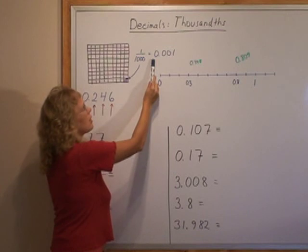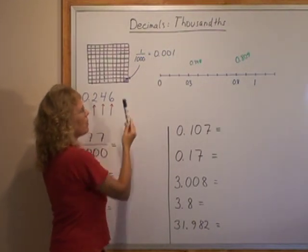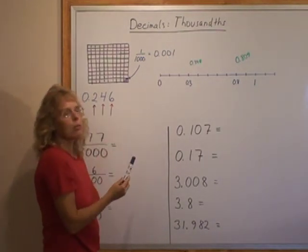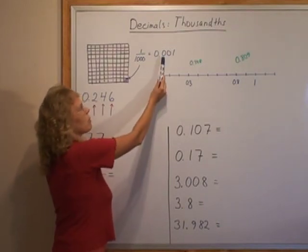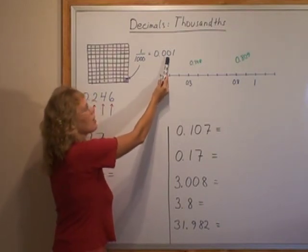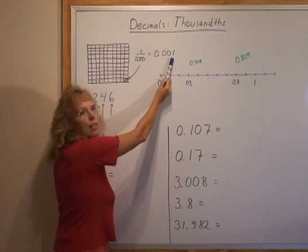As a decimal we write 0.001 that's because in a decimal we have, after the decimal point, we have tenths place, hundredths place, and then comes thousandths place.